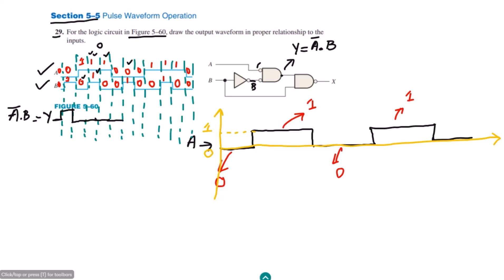Here B is 1 while A is 0, so A complement is 1 — output is 1. When both are 0, B remains 0 so the product is 0. When A is 1 and B is 0, B is 0 so output is 0. When both are 1, A complement is 0 so product is 0. When A is 1 and B is 0, any zero input makes the output 0. When both are 0, output is 0. This completes the waveform for Y = A' · B.